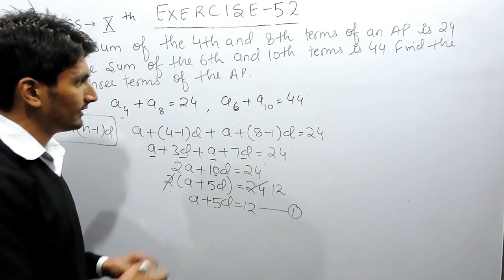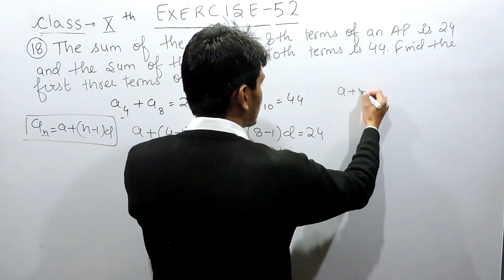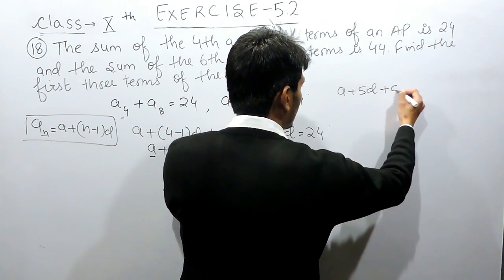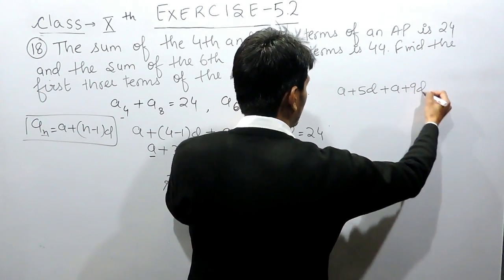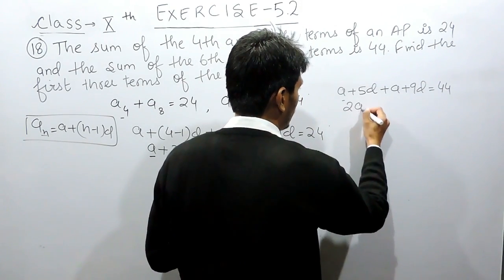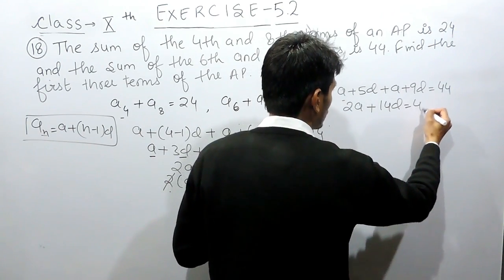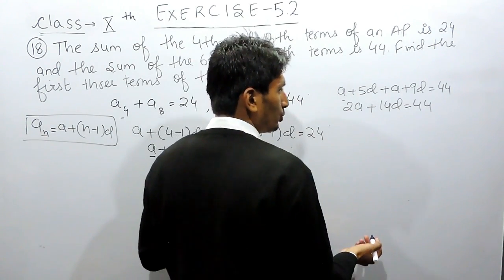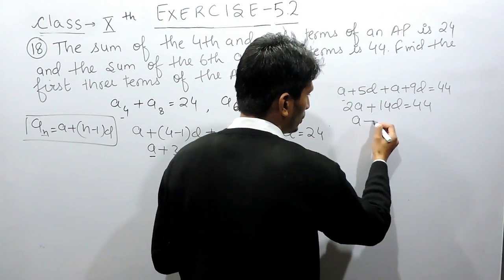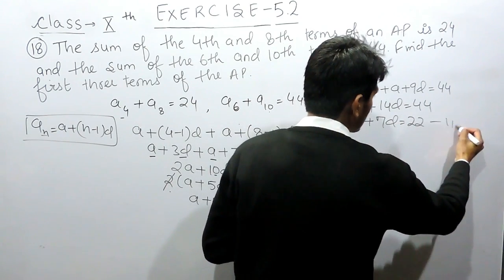Similarly, for the second equation, the 6th term equals A plus 5D and the 10th term equals A plus 9D, and their sum equals 44. So 2A plus 14D equals 44. Dividing the complete equation by 2, we get our second equation: A plus 7D equals 22.